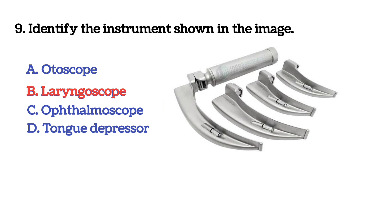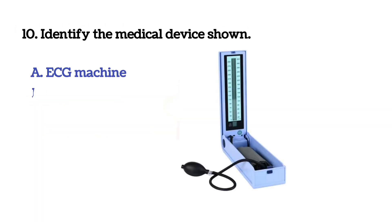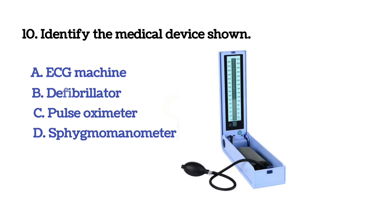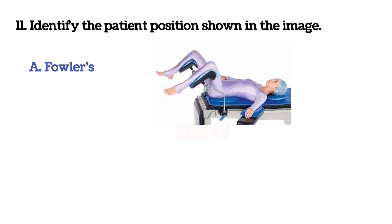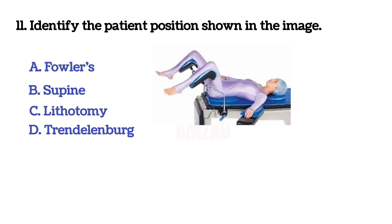Next question: identify the medical device shown. Option A: ECG machine. Option B: defibrillator. Option C: pulse oximeter. Option D: sphygmomanometer. The answer is D, sphygmomanometer. Next question: identify the patient position shown in the image — the answer is C, lithotomy position.